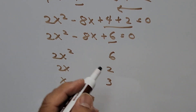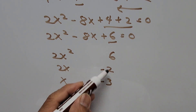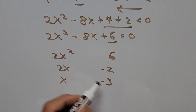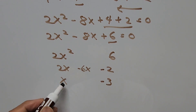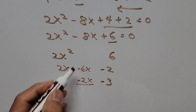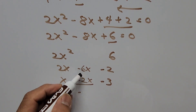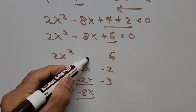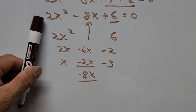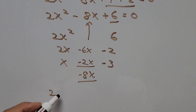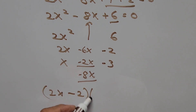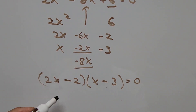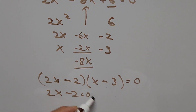Since the middle term is negative, both factors must be negative. Multiplying two negatives gives a positive third term. Checking: negative 3 times 2X gives negative 6X, and negative 2 times X gives negative 2X — summing those gives negative 8X, which matches the middle term. So the factors are (2X minus 2) and (X minus 3), equal to 0.